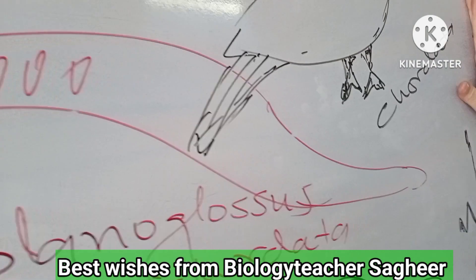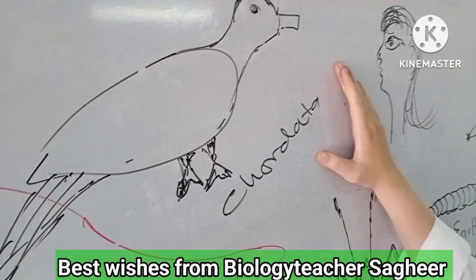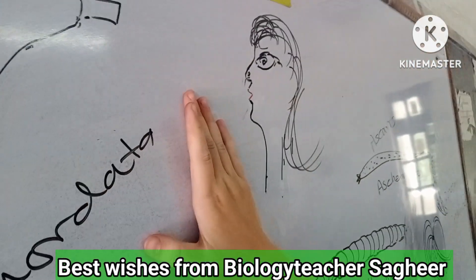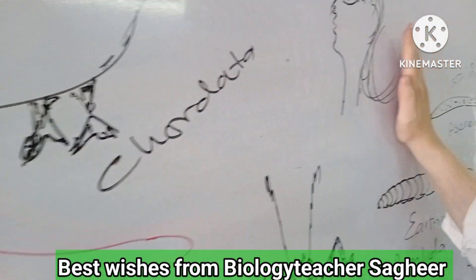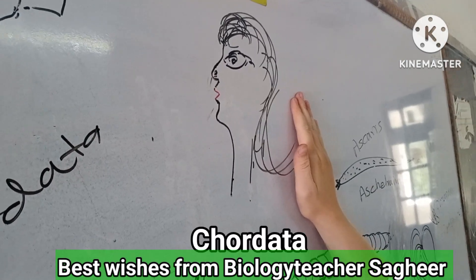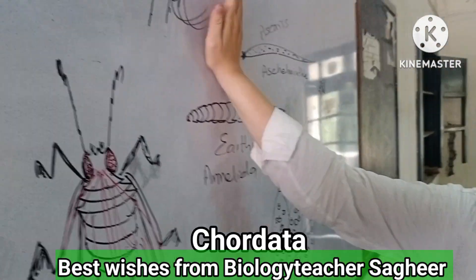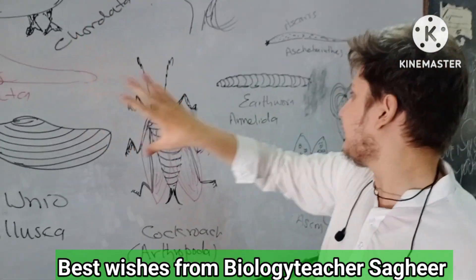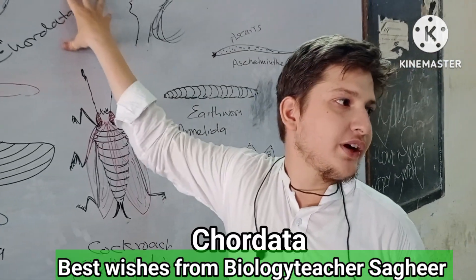This is Chordata, which we studied in animal diversity — in humans and birds. It is the most important from the word and biology point of view, because they are more extensively studied than all other phyla. They are Chordata.